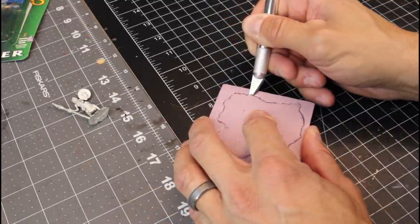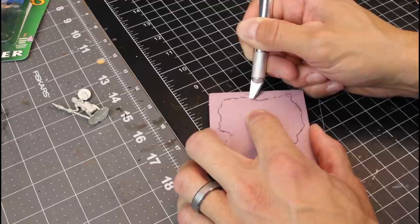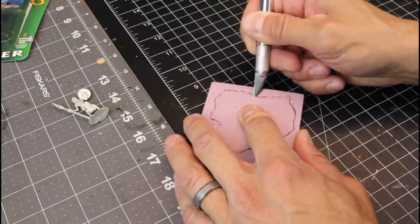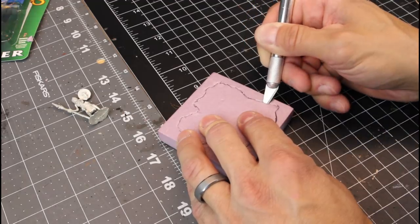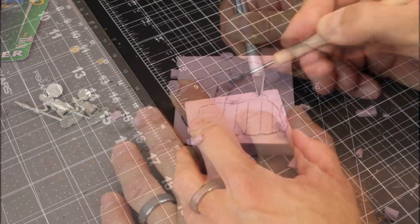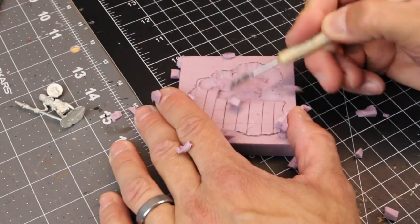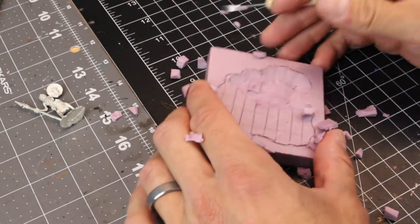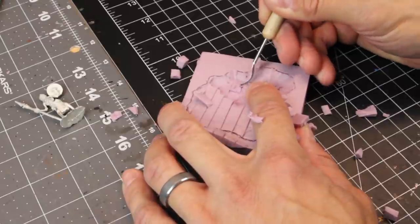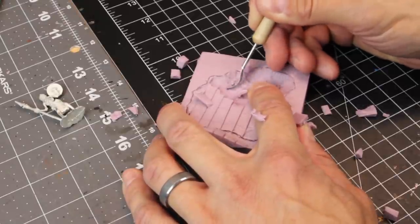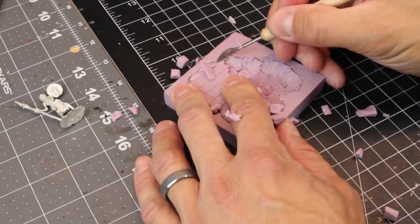So now very carefully, we're going to use our exacto knife to carve in the shape of the acid pool at an angle. Now we're trying very carefully not to go through to where the miniature bases are on the bottom of this. If you do, you can fix that pretty easily with some hot glue a little bit later on in the video.